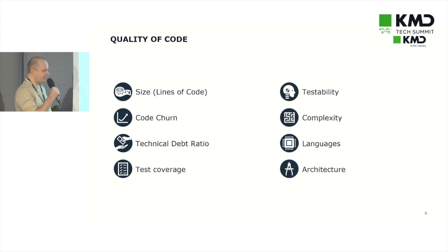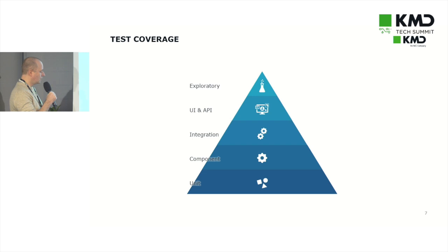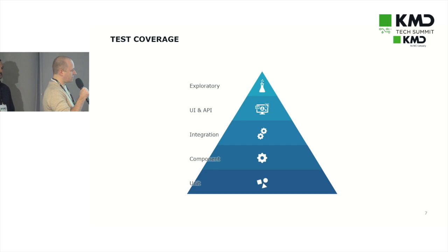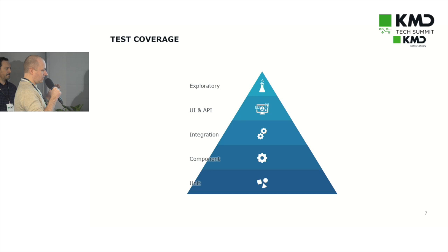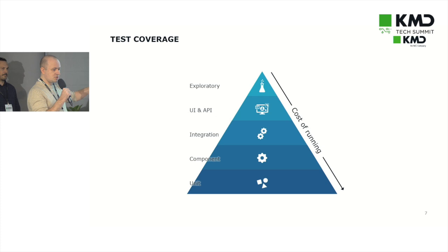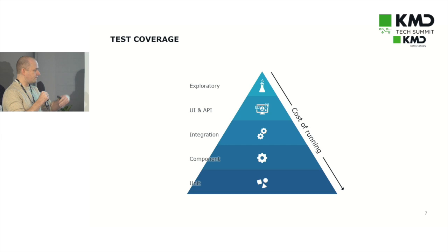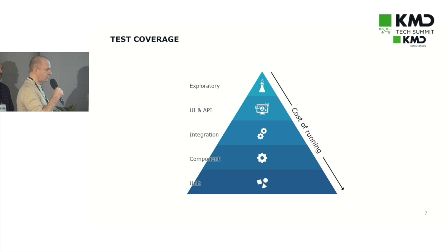The first thing we look at is test coverage. This probably doesn't come as a surprise, but we want the majority of tests to be around the lower end of the test pyramid — the unit tests, which are closest to the code. We want small, isolated tests that can be triggered rapidly. The lower you are in the pyramid, the cheaper it is to write and run the tests, and the feedback loop is shorter — meaning you get faster feedback on whether a change is successful.